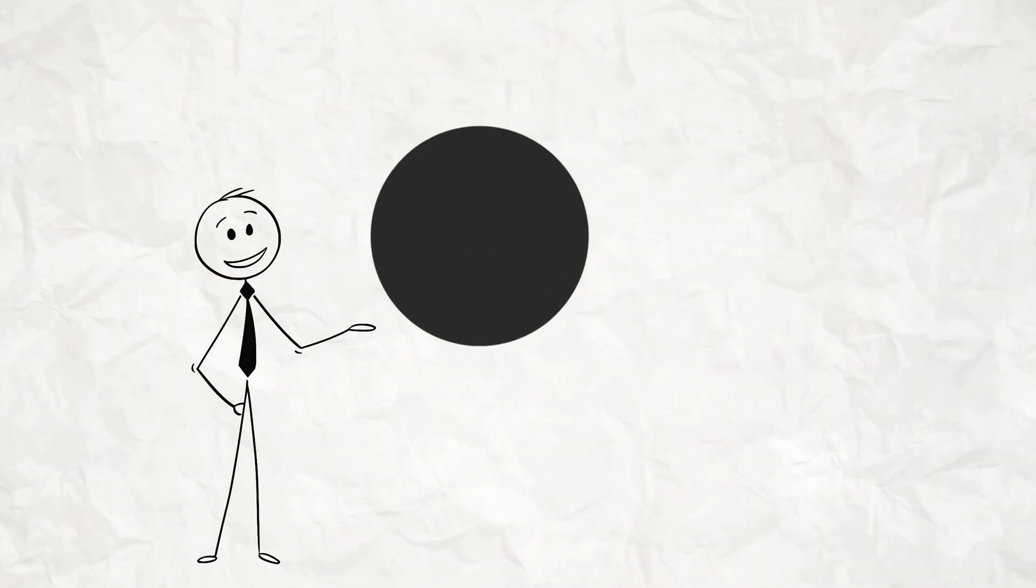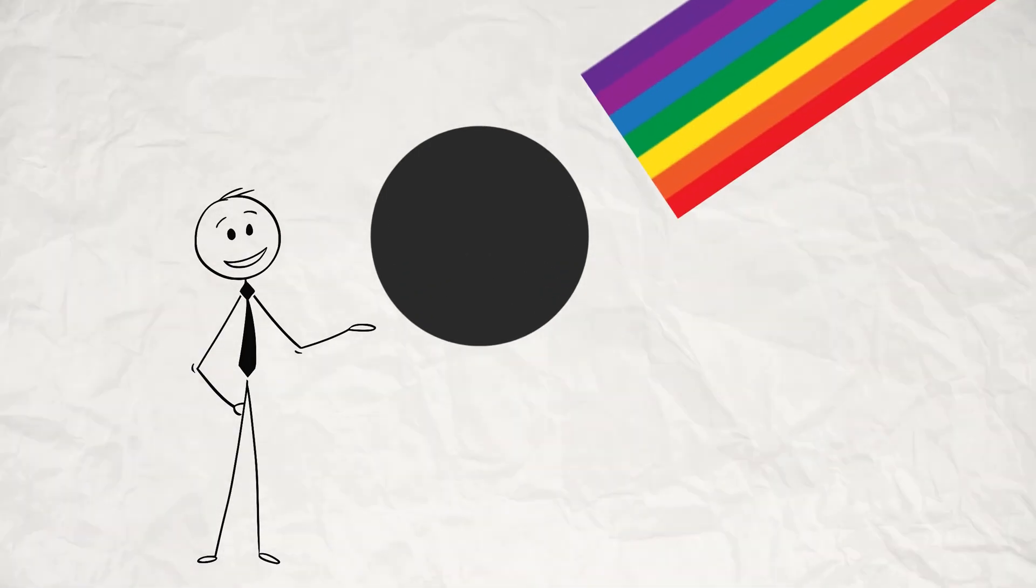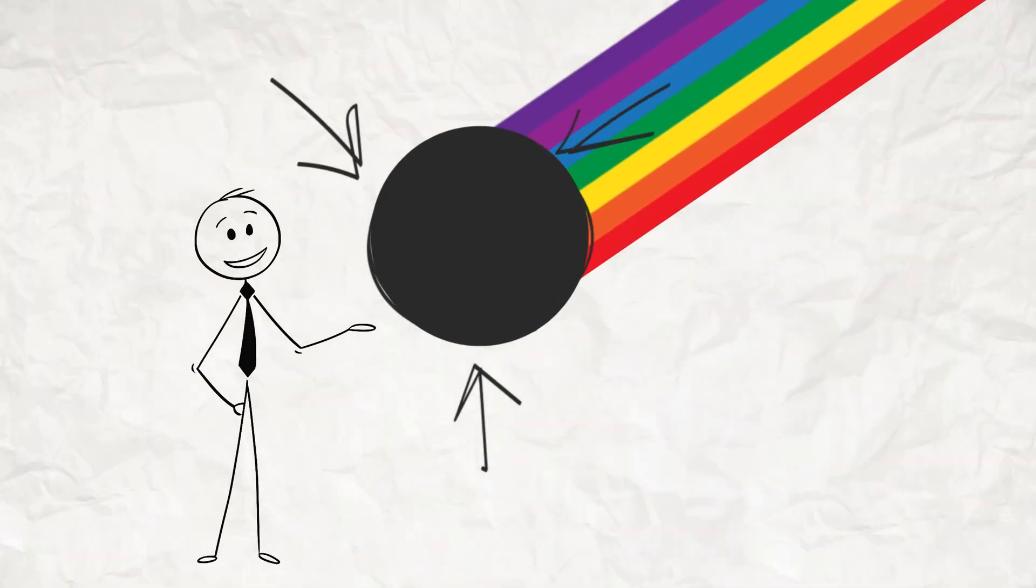In essence, black objects are black because they absorb all wavelengths of light, and your eyes receive no reflected light. So, you perceive nothing, or more accurately, you perceive black.